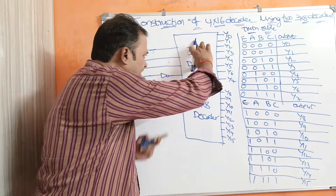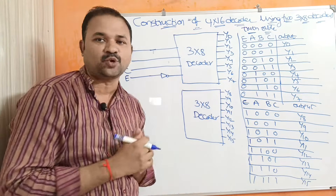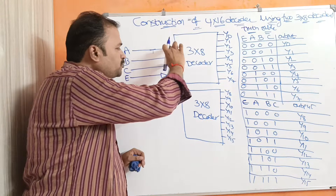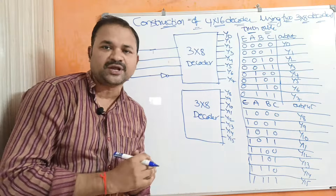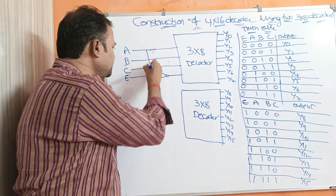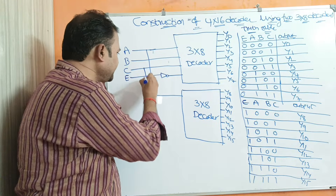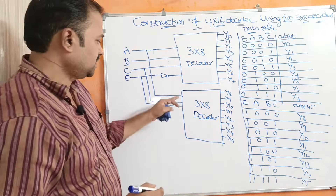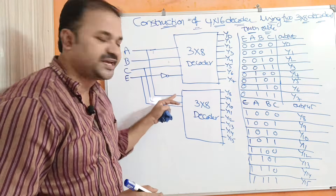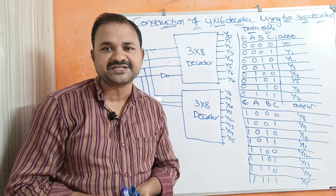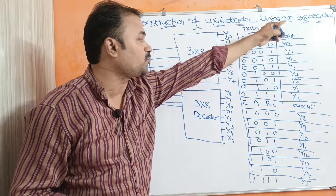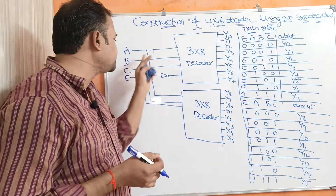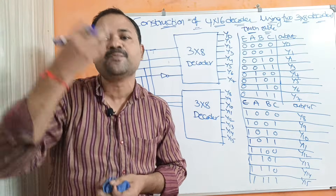This is the first 3 by 8 decoder and this is the second 3 by 8 decoder. The 3 by 8 decoder accepts 3 inputs A, B, C, and we have to pass these same inputs to the second decoder as well. Since a 4 by 16 decoder accepts 4 inputs, in addition to A, B, C we need to have one more input.